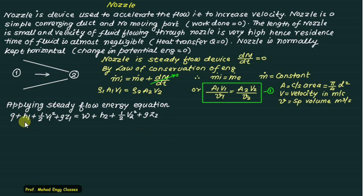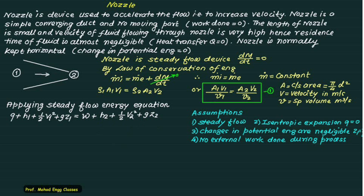Applying the steady flow energy equation for single input and single output: Q plus h1 plus half·V1² plus g·z1 equals W plus h2 plus half·V2² plus g·z2. Our assumptions are: steady flow so dm/dt equals zero; isentropic expansion so heat transfer is zero; changes in potential energy are zero so z1 equals z2 and that term cancels; and no work done so W equals zero.